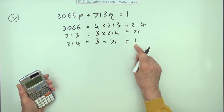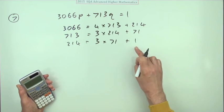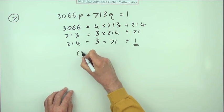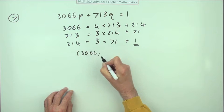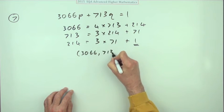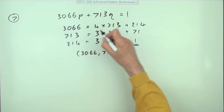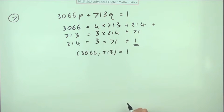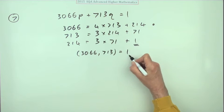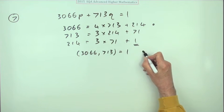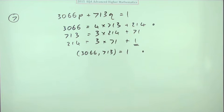So 1's it. That means the greatest common divisor of 3066 and 713 is equal to 1. Now the marks were given as starting it off for one mark and reaching 1, but not necessarily stating it this way. Just reaching 1, I'll put it here anyway for the second mark. But now we've got to reconstruct this equation from this.